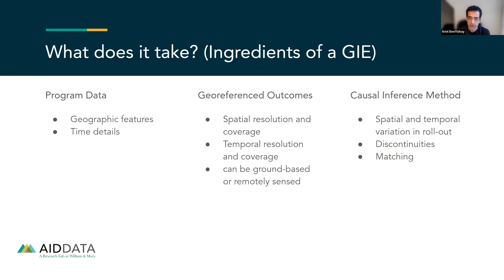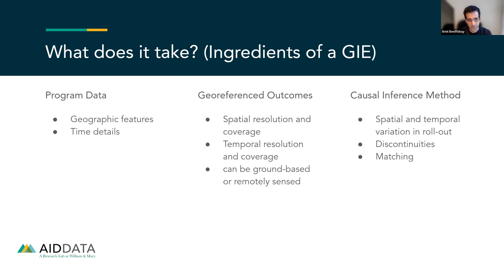What does it actually take to do a GIE? The key components that distinguish a GIE from other designs: first, a very key ingredient is the program data — we need well-specified geographic features. The intervention itself has to have a well-understood geographic reach or extent, captured in GIS so it can be well interpreted. We also often need details about the timing of the intervention by individual units. As you've seen in all these examples, we have the staggered rollout of interventions across space and time, and we leverage that staggered design for the causal inference piece.